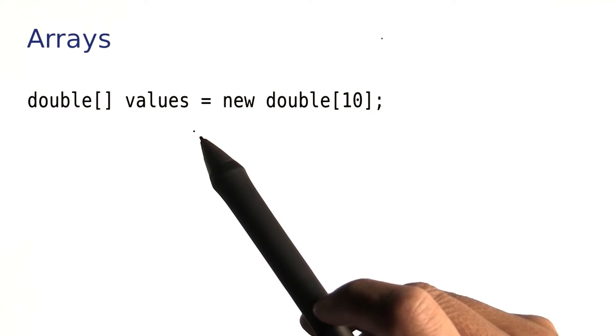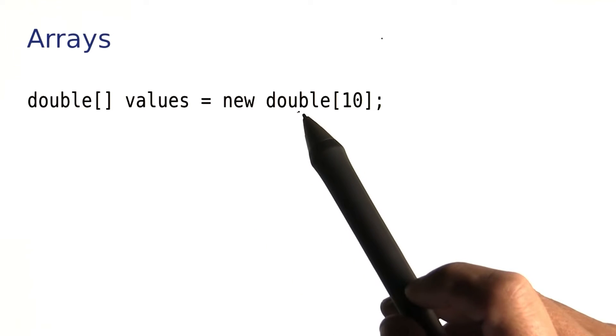Here is how to make an array of values of type double. As you can see, it looks quite different than the declaration of an ArrayList, so let's take it apart.